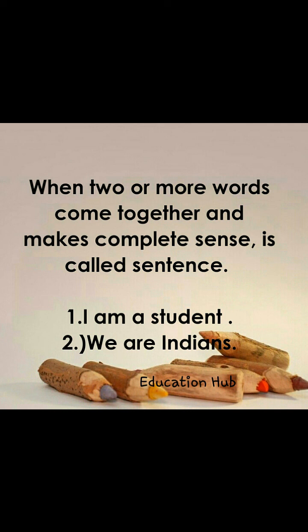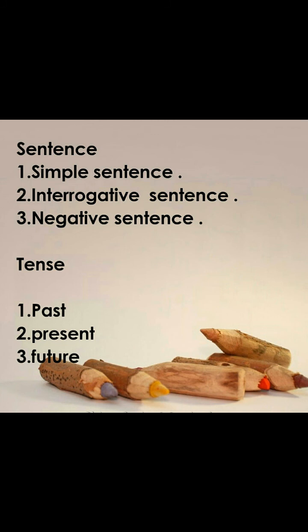When two or more words come together and make complete sense, it's called a sentence. For example, 'I am a student' or 'We are Indians'. There are three types of sentences we use in spoken English: a simple or positive sentence, and interrogative — where we ask questions like 'What are you doing?' or 'Where are you going?'